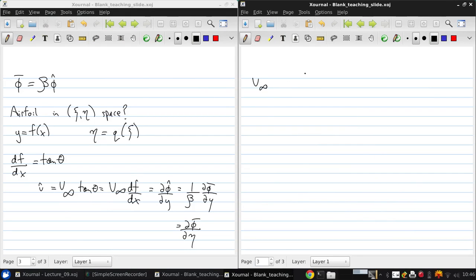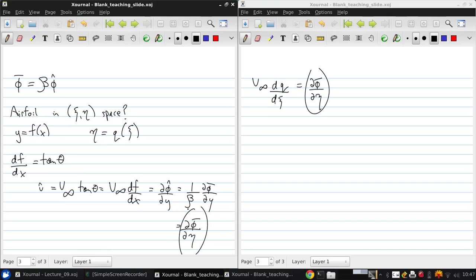So what this means is that in the transform space, v infinity times dq/dc, which is the slope, is going to be d phi bar d eta. So this is just applying the definition of the flow tangency condition in the transform space. What we can see is that the right hand sides of these two equations are the same. So the left hand sides must be the same.